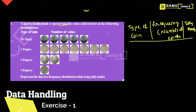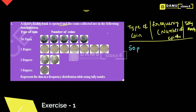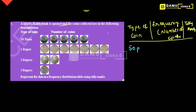So let's take the first type of coin: 50 paise. For that, how many coins are there? There are 5. So for this, we have to write the tally marks. What are the tally marks for 5?